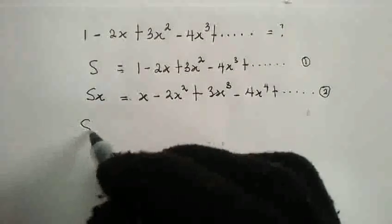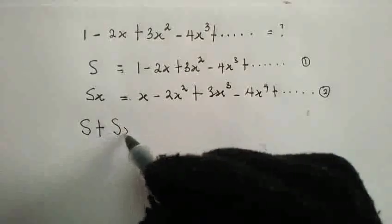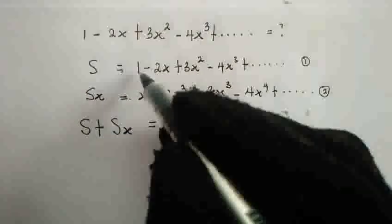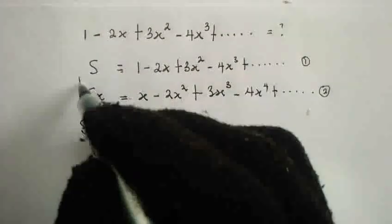So, my equation 1 is S plus my equation 2 is Sx. This is equal to, we bring down this one. Then, I'm adding both equations.